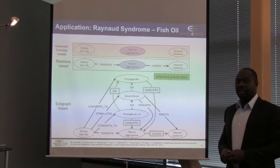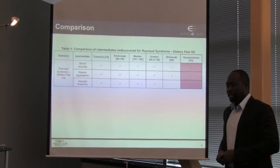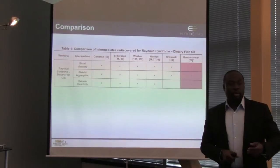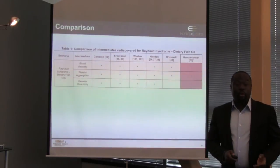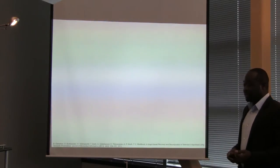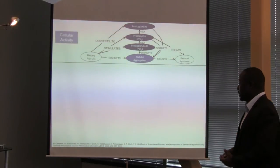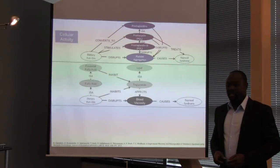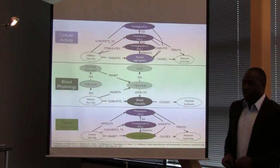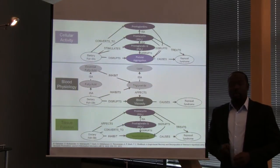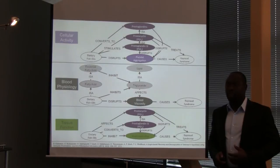We subsequently learned that a former NOESIS alumnus, Dr. Karthik Ramakrishnan, had in fact done this automatically, though his work is unpublished and not visible to the scientific community. Beyond finding complex associations, we found that not only are there associations between Raynaud and fish oil along cellular activity — platelet aggregation — but also along blood physiology with blood viscosity, and vasoconstriction in terms of tissue function. The fundamental question we address in this dissertation is not only how to create these complex subgraphs, but how to capture context to create subgraphs on multiple thematic dimensions and automate this process.